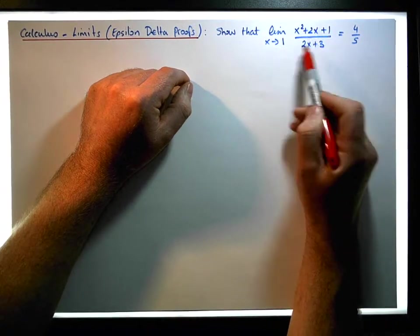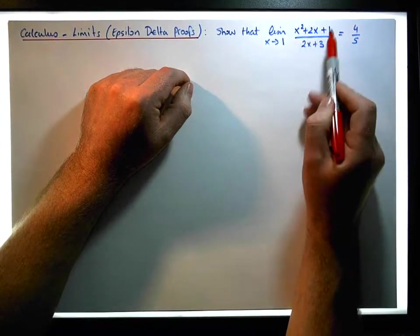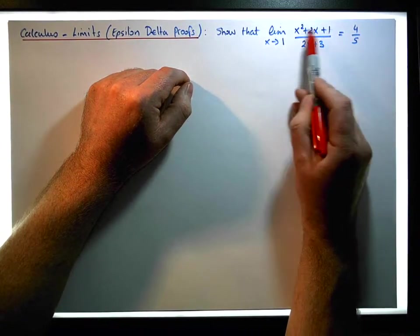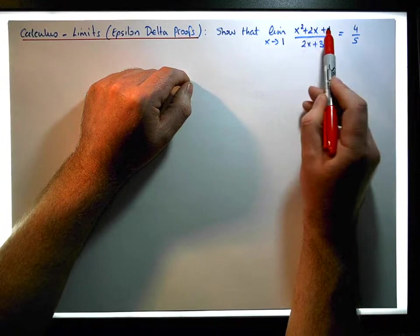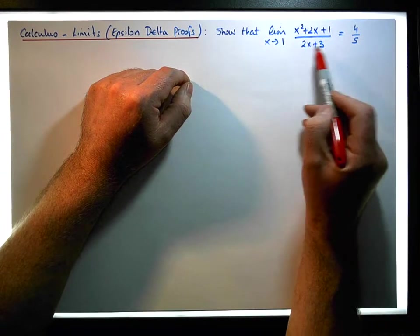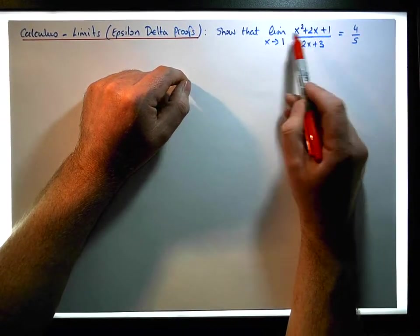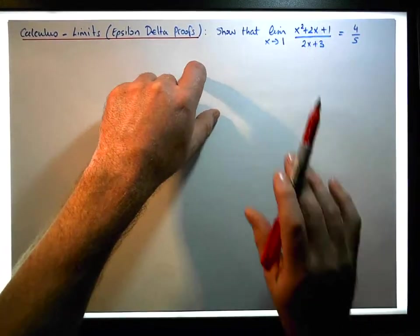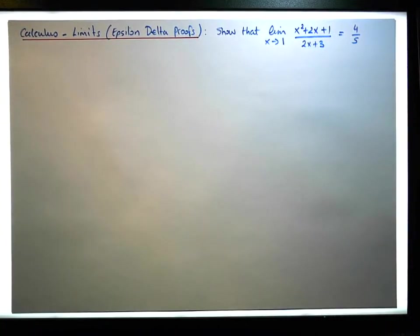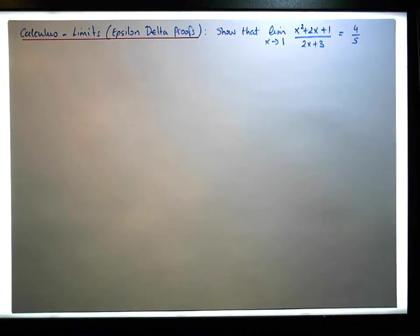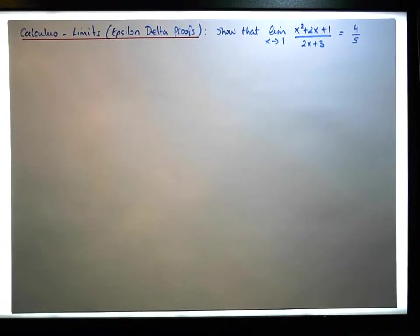This particular rational function has no commonality between the numerator and the denominator — it's irreducible. That's an interesting fact for this particular proof, because it's going to introduce a number of extra constraints that we're going to have to consider and solve.